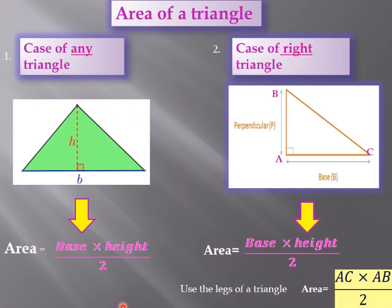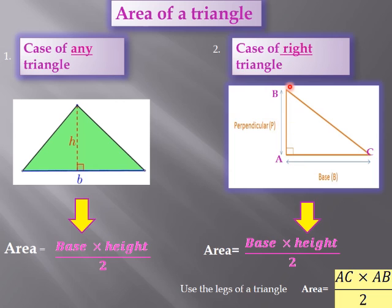Area of a triangle — we have two cases: the case of any triangle and the case of a right triangle. The area of any triangle is equal to base times height over 2. As for the area of a right triangle, it's similar — base times height over 2 — but we use the legs of the triangle. For example, in triangle ABC that is right at A, the legs are AC and AB, so the area equals AC times AB over 2.